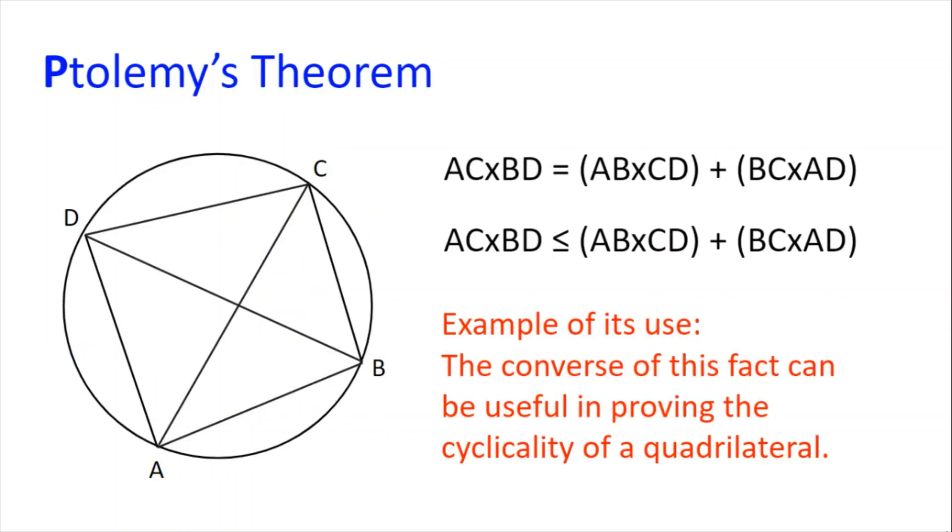Final one for today, we have P for Ptolemy's theorem, which states that for any cyclic quadrilateral ABCD, AC multiplied by BD is equal to AB multiplied by CD plus BC multiplied by AD. This is the equality case of Ptolemy's inequality, which states that for any quadrilateral ABCD, AC multiplied by BD is less than or equal to AB multiplied by CD plus BC multiplied by AD.